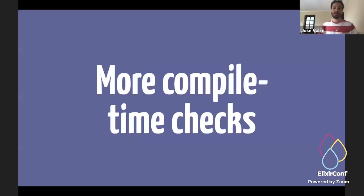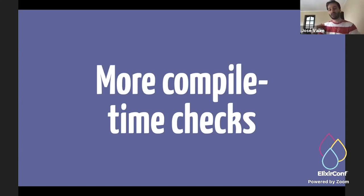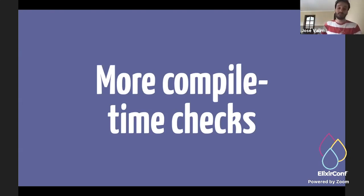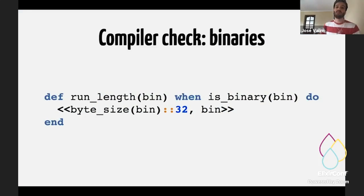So that's it about Interop. Now let's talk about some things that are very specific to Elixir. One of the things I'm really excited about this release — an area we have been working on for a while — is that we are adding more compile time checks. One of those compile time checks is related to binaries. So let's take a few seconds and look at this code. Can you spot what is wrong here?